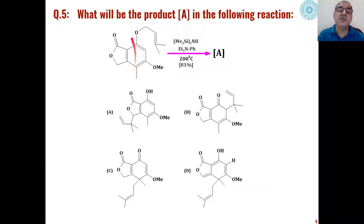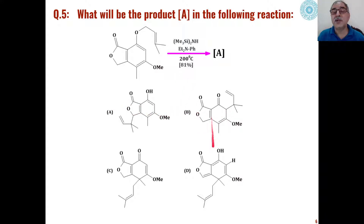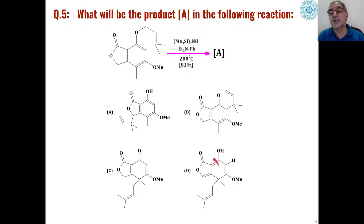Then, these types of lactone ethers when reacted with trimethylsilylamide in the presence of N,N-diethylaniline at 200 degrees centigrade — the product is formed in 81% yield. We are to identify which of the four choices is the product and what is the mechanism of its formation.